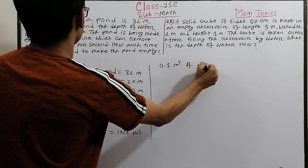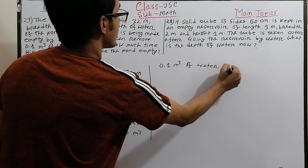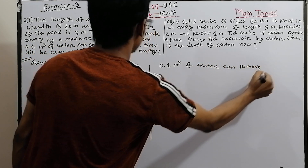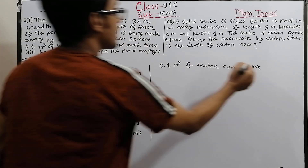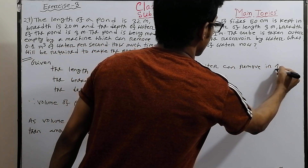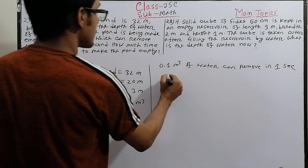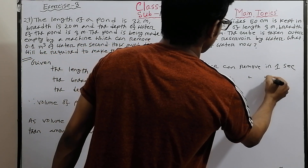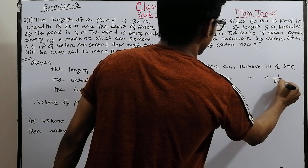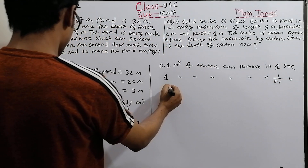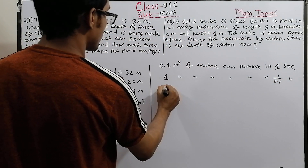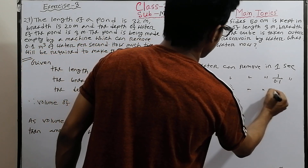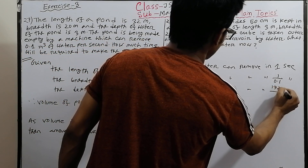In one second, 0.1 cubic meters of water can be removed. Using the unitary method: to remove 1920 cubic meters, we divide 1920 by 0.1. So 1920 cubic meters of water can be removed in 1920 divided by 0.1 seconds.